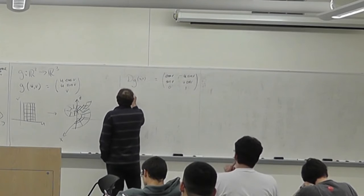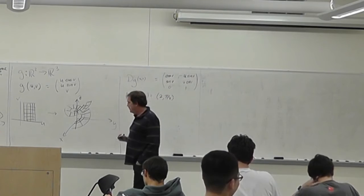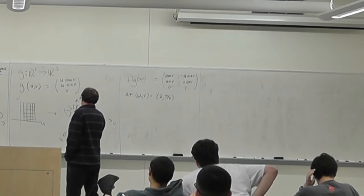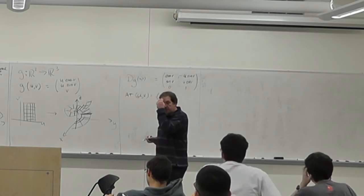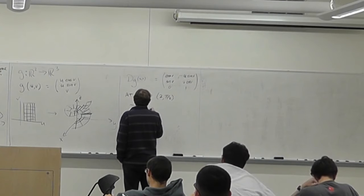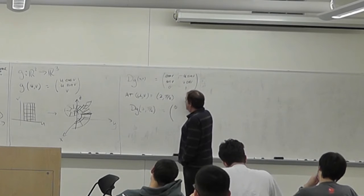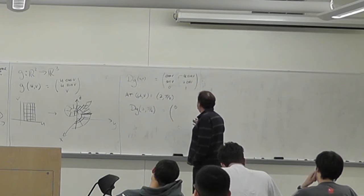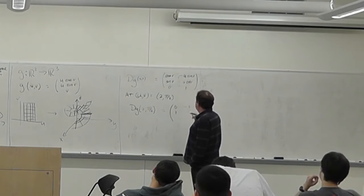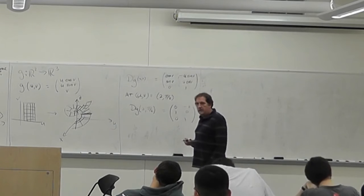At the point (2, π/2), dg evaluated there is the matrix: cos(π/2)=0 so first entry is 0, sin(π/2)=1 so second entry is 1, giving −2 for the u·cos v term; then sin(π/2)=1, cos(π/2)=0 again, and the last row is 0, 1. So I should get that 3×2 matrix.